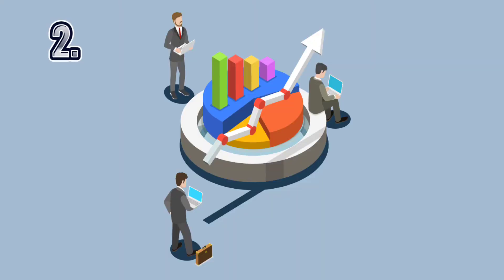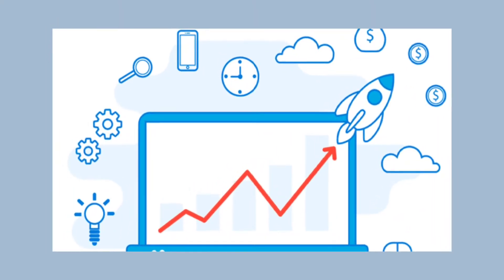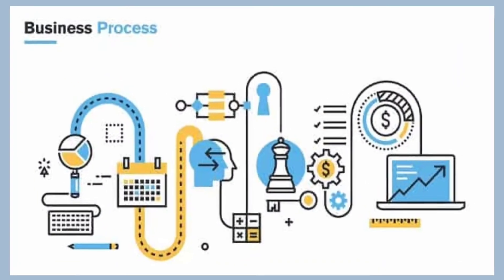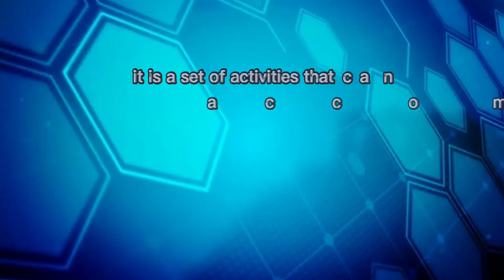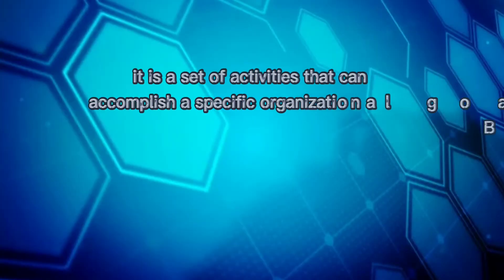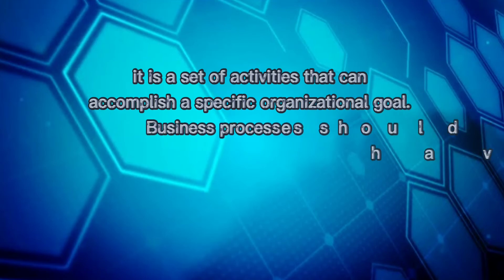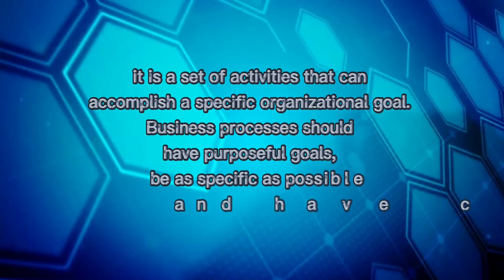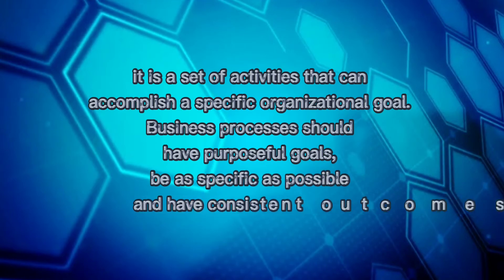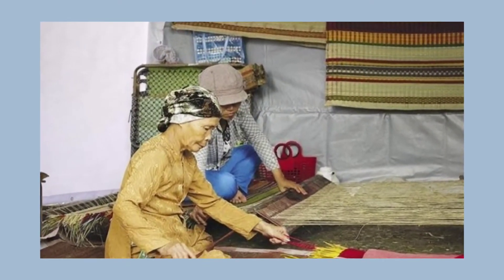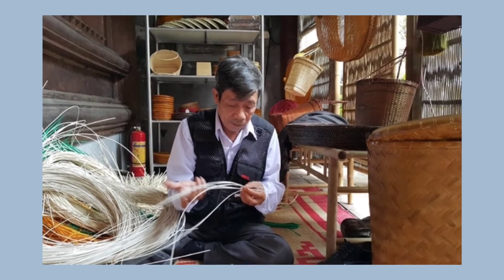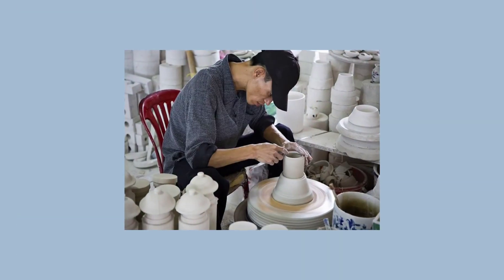Business process is a set of activities that can accomplish a specific organizational goal. It should have purposeful goals, be as specific as possible, and have consistent outcomes. One example is the process of making products to sell in the market, such as by the use of manpower or by the use of new technology.